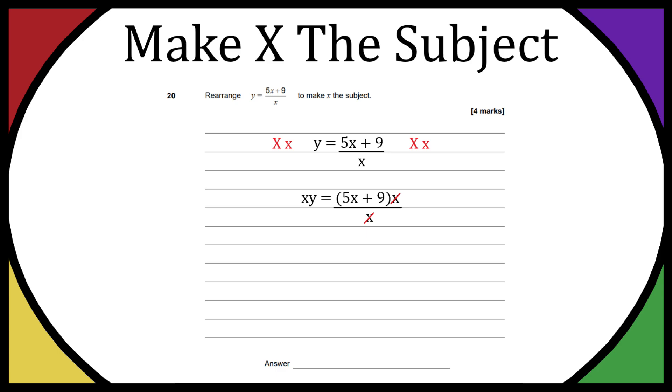Now from here you want to get all similar terms on one side and all the other terms on the other side. Similar terms in this case are going to be any terms with x in them so everything with an x we're going to get on one side and everything without an x we want to get onto the other side.